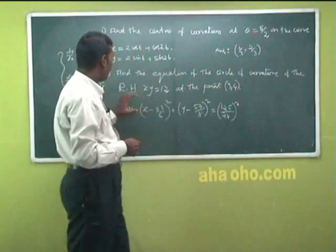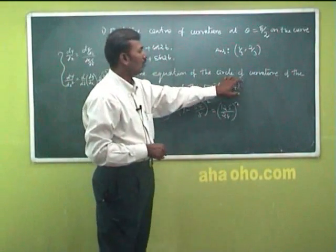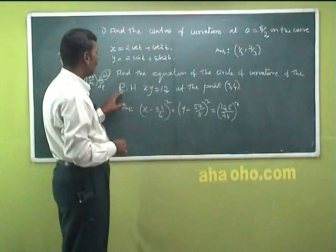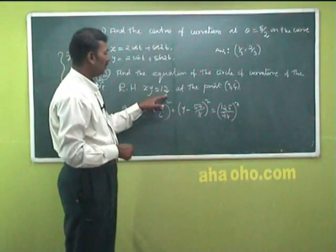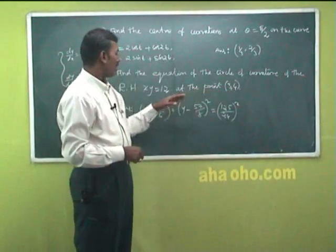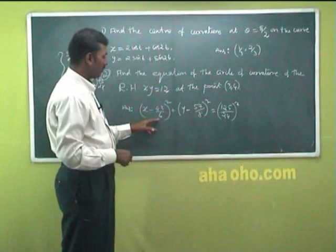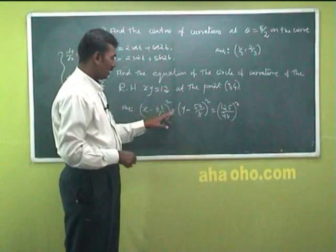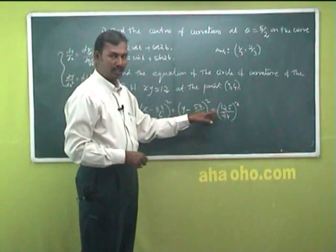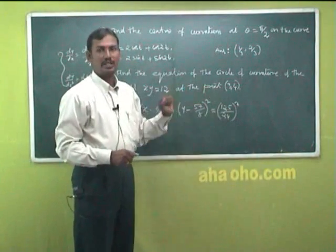Find the equation of the circle of curvature of the rectangular hyperbola xy = 12 at the point (3, 4). The answer is: (x − 43/6)² + (y − 57/8)² = (125/24)².